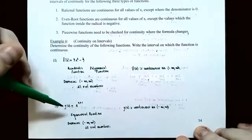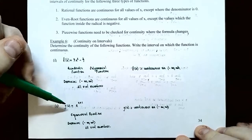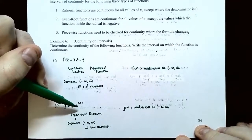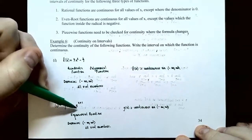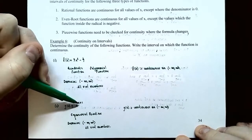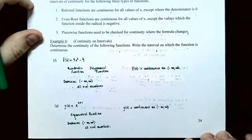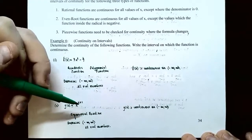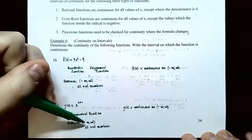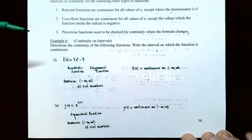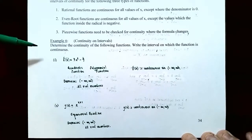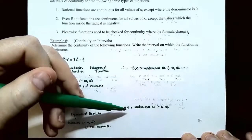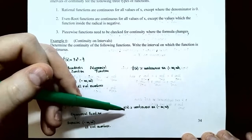Number 2: g(x) = e^(x+1). Exponential functions have a domain of all real numbers, (−∞, ∞), and they have no jumps, holes, or vertical asymptotes. So the function is continuous on the open interval (−∞, ∞).